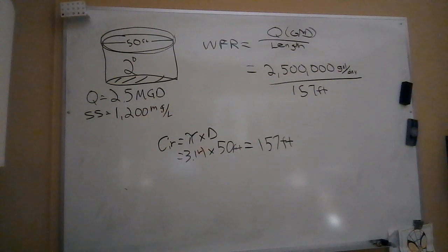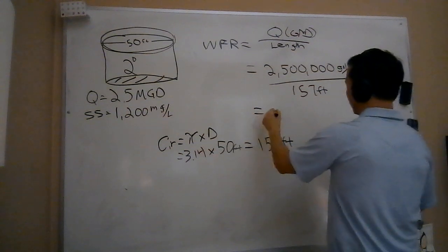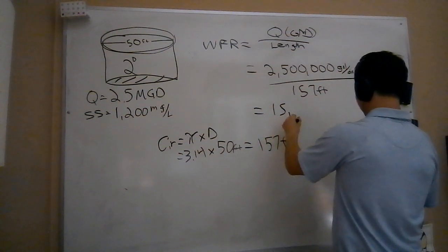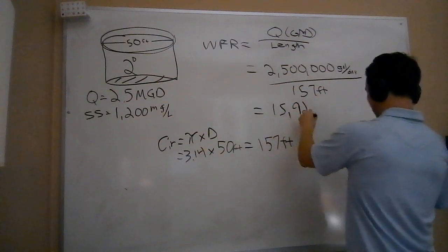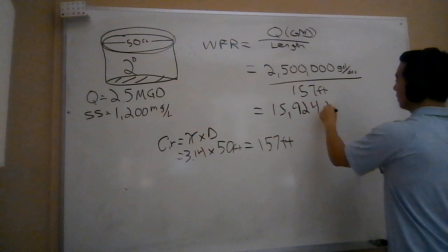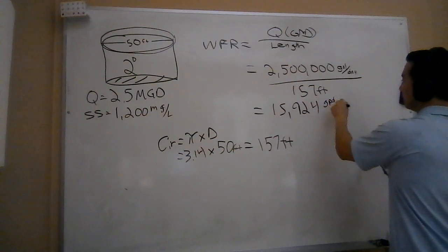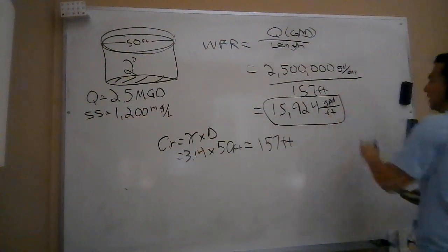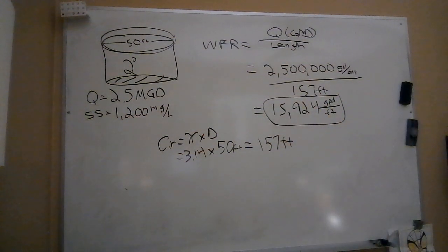And I get to a weir overflow rate of 15,924 gallons per day per foot of weir. That's how much water is flowing over each foot of this weir.